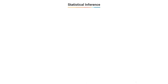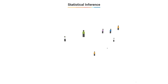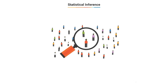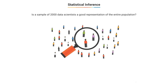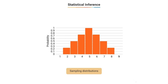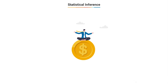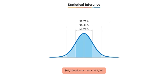Having learnt all these building blocks, you will be able to proceed to the final section on statistical inference, which gives you all the tools to draw inferences from samples for entire populations. We will start with a primer on samples and sampling, going through how to ensure that our sample — for example, 2,000 data scientists — is a good representation of the entire population of all data scientists in the US. We will then make sampling distributions, use the central limit theorem to extrapolate and make inferences, and estimate confidence intervals such as $97,000 plus/minus $39,000.